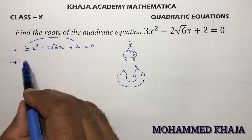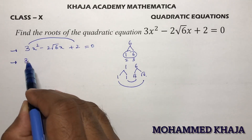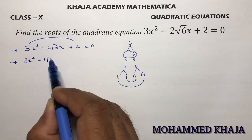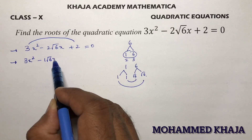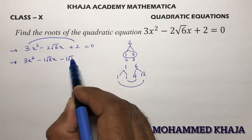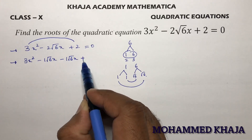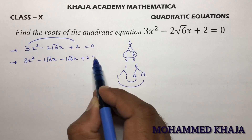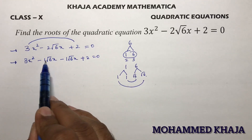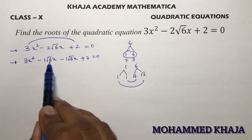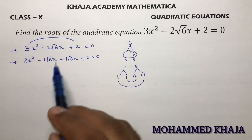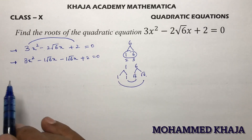So we write: 3x² - √6x - √6x + 2, because -√6x - √6x equals -2√6x.